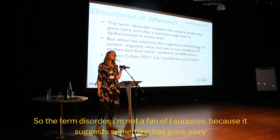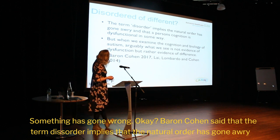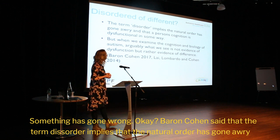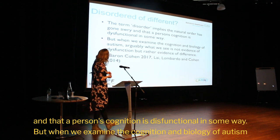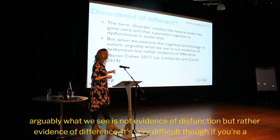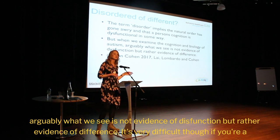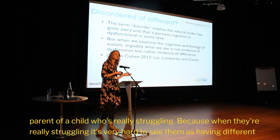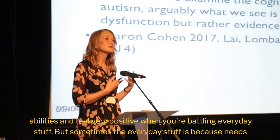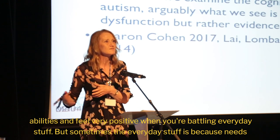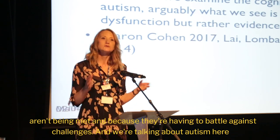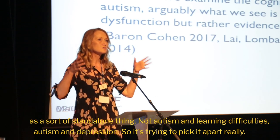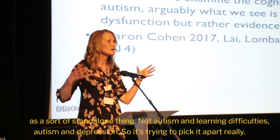The term disorder — I'm not a fan of, because it suggests something has gone awry, something has gone wrong. Baron-Cohen said the term disorder implies that the natural order has gone awry and that a person's cognition is dysfunctional. But when we examine the cognition and biology of Autism, arguably what we see is not evidence of dysfunction, but rather evidence of difference. It's very difficult though if you're a parent of a child who's really struggling. But sometimes the everyday struggle is because needs aren't being met, and they're having to battle against challenges. And we're talking about Autism as a standalone thing — not Autism and learning difficulties, Autism and depression.